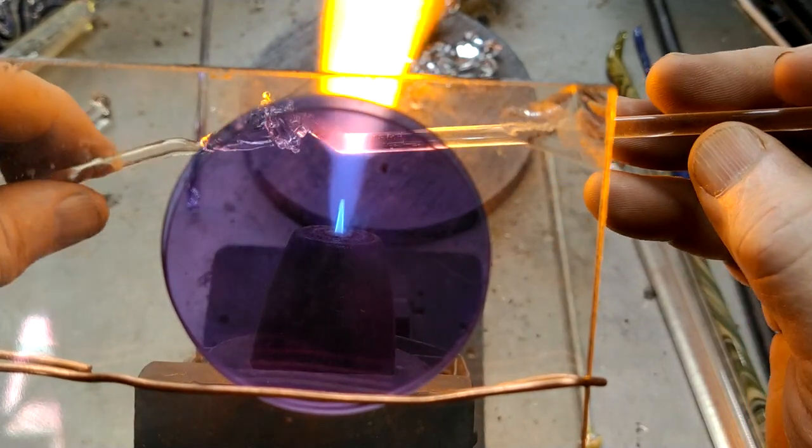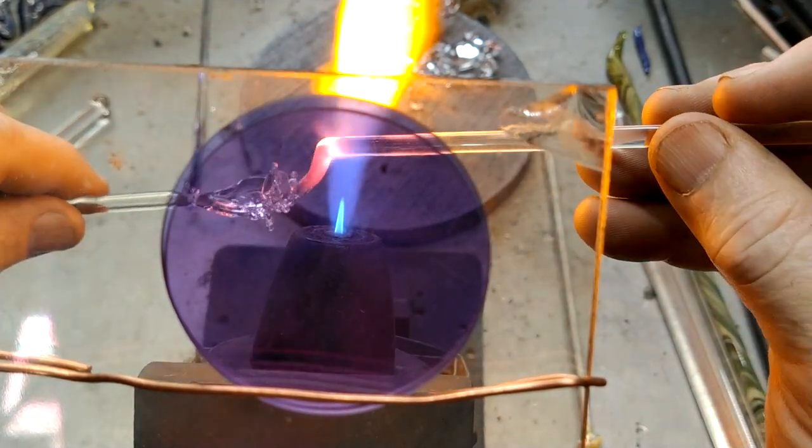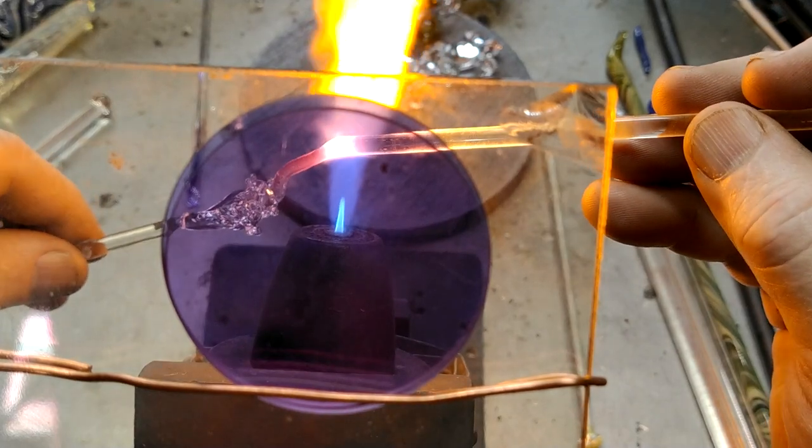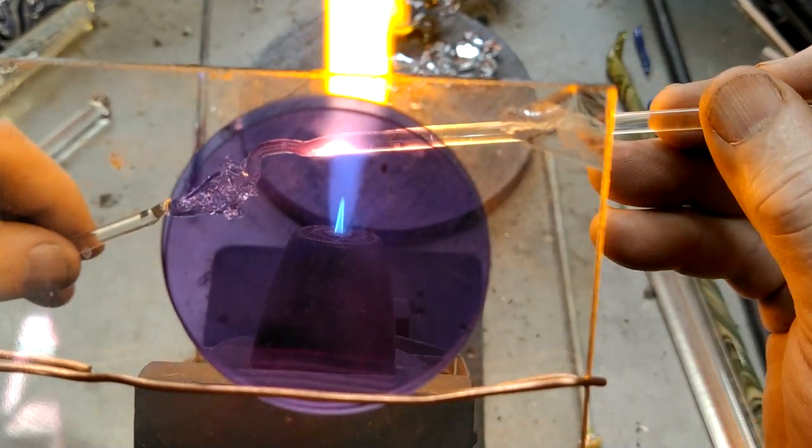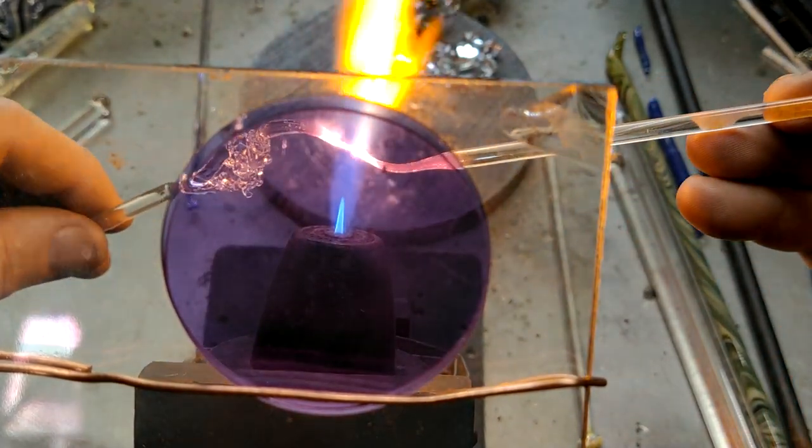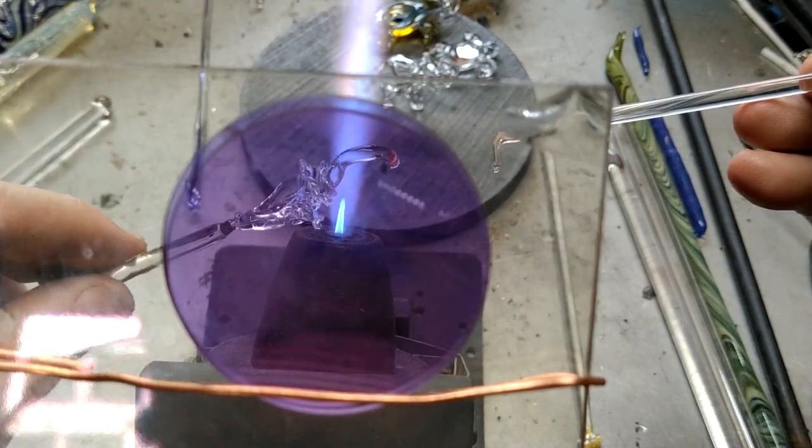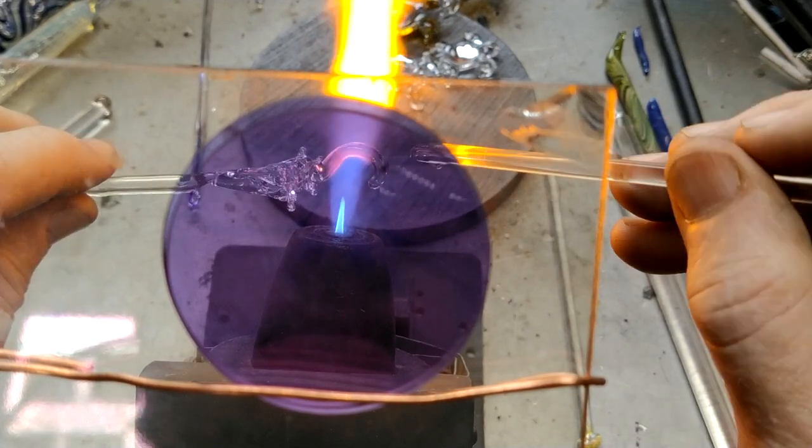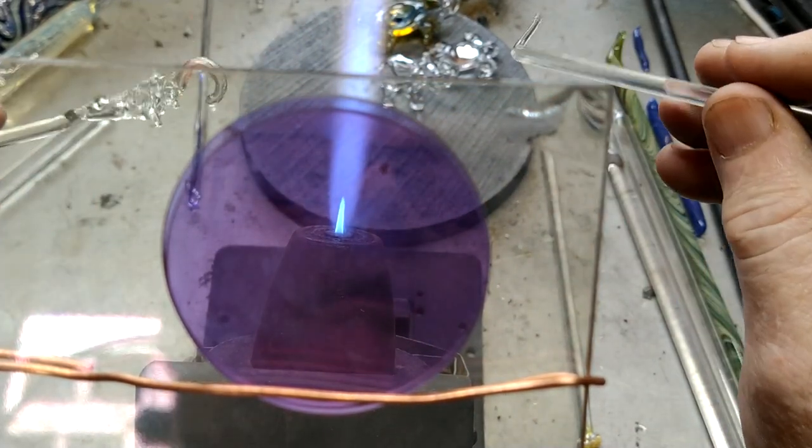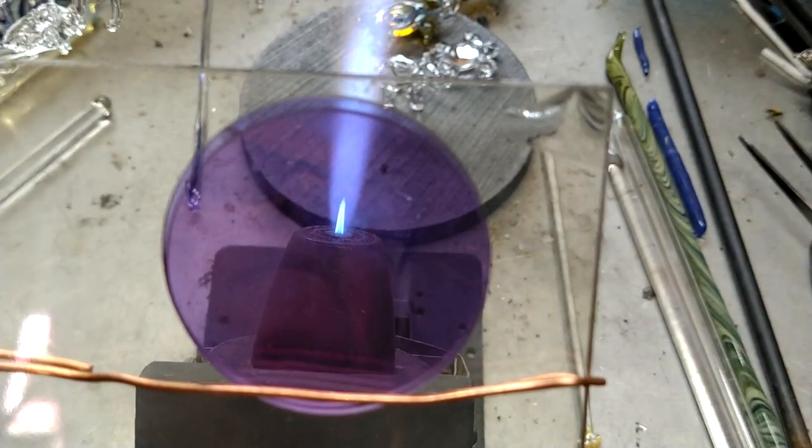Now I'm going to do a bail or a loop on the top and I usually do those simple ones by doing sort of a question mark above, question mark above, and then I heat it. You know what, let's see if I can do this.